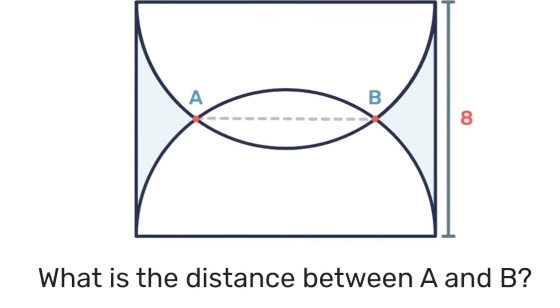So that means that the length from A to B is double that amount which is 6. Did you get it correct? Let us know in the comments below.